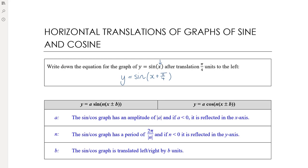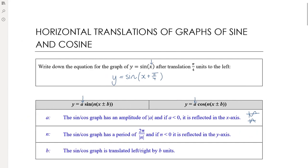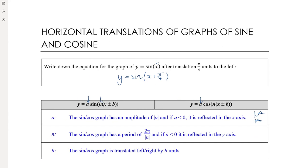Adding that into our transformations: parameter 'a' affects the amplitude, and if 'a' is negative the graph is reflected in the x-axis — so a sine graph reflected in the x-axis goes down before it goes up, and a cosine graph reflected in the x-axis starts at the bottom then goes up and comes back down. Parameter 'n' affects the period — that's a dilation by 1/n from the y-axis — so the period becomes 2π/n.